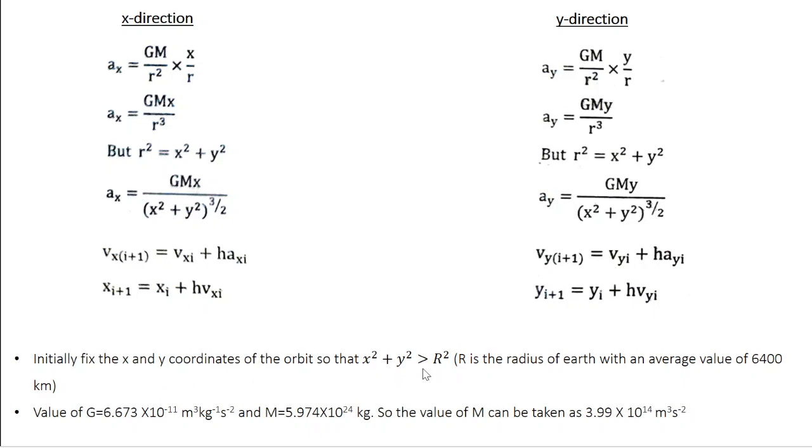One thing you have to note is that when you choose the X and Y coordinates, always make sure that x² + y² is greater than R², where R is the radius of Earth. Why? Because the satellite is rotating around Earth, so the extent of the orbit should be greater than the extent of the perimeter of the Earth.